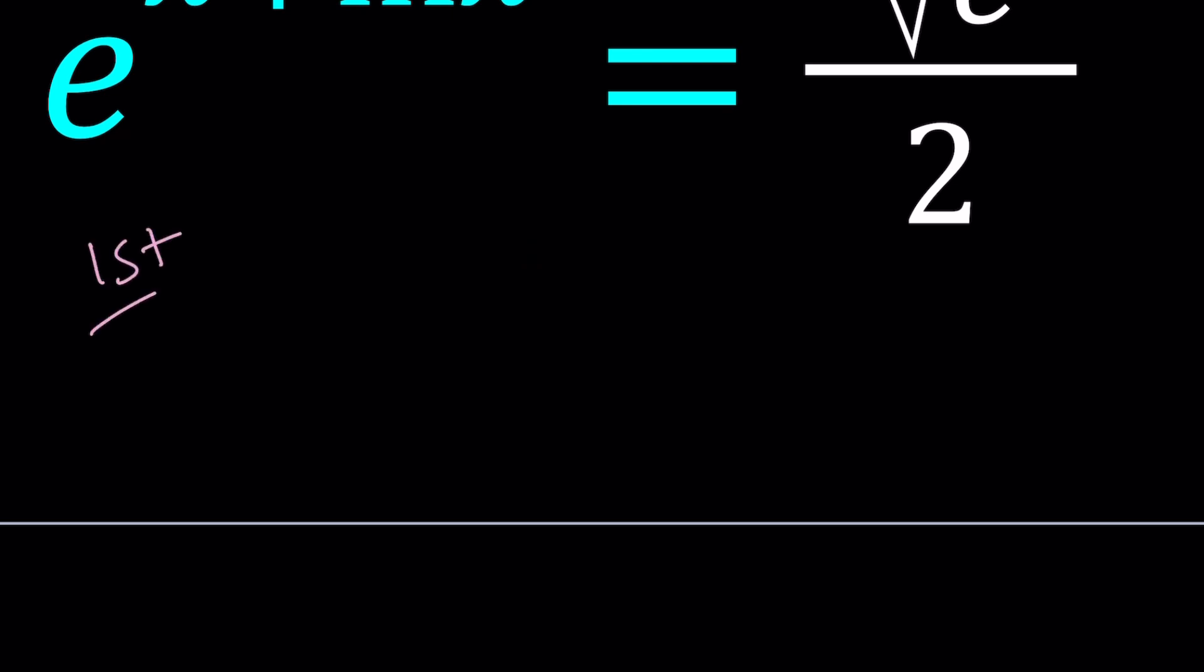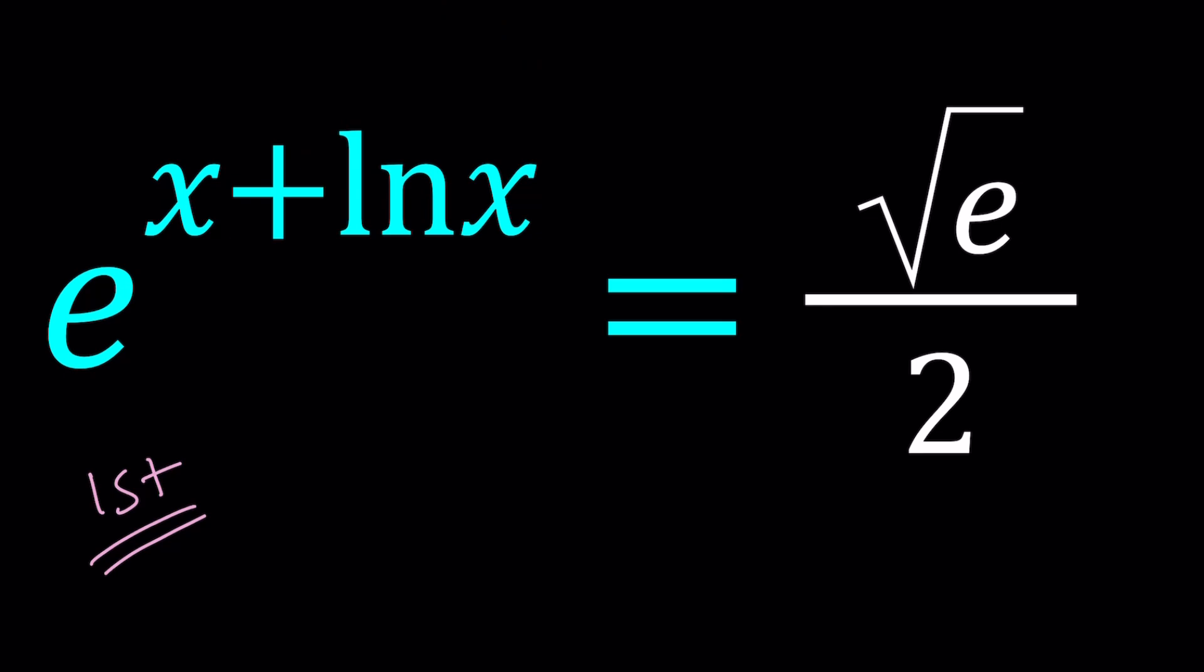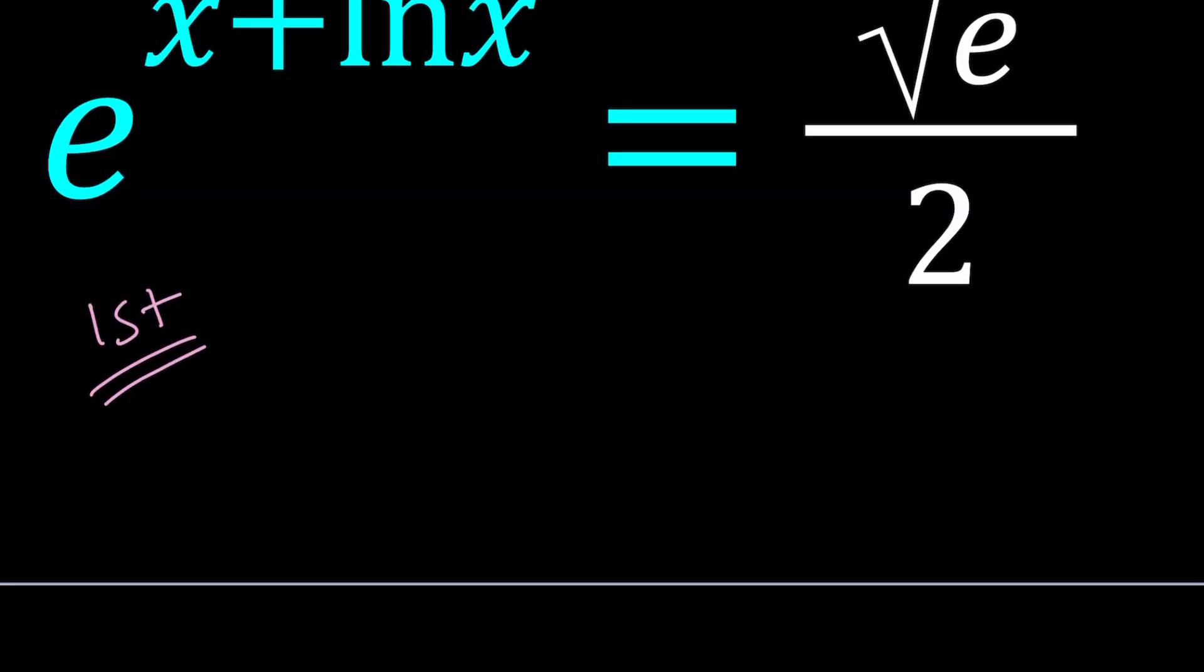First method. Now since I have an equation that has e at the base and I have square root of e on the right hand side and ln x in the exponent, let's natural log both sides. ln e to the power x plus ln x equals ln square root of e divided by 2.